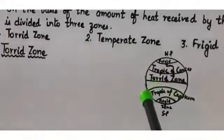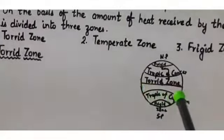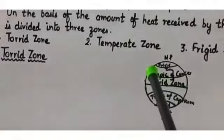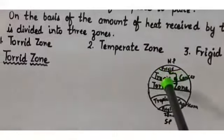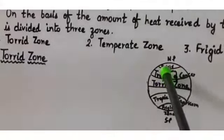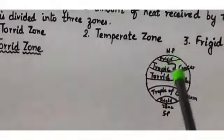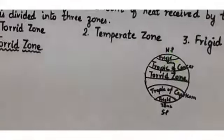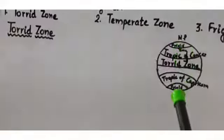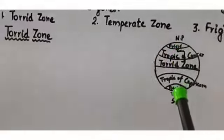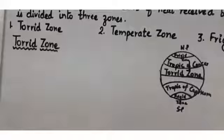The torrid zone is in the middle, around the equator. The frigid zones are at the poles. The temperate zone lies in between — between the Tropic of Cancer and the frigid zone — on both sides, towards the north pole and towards the south pole. Let us now study about them in detail.